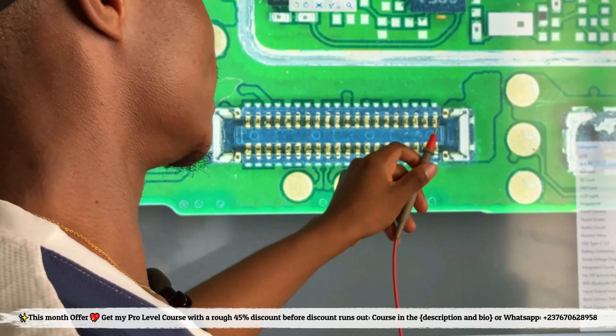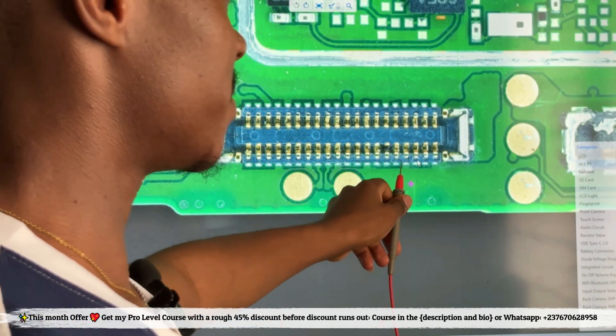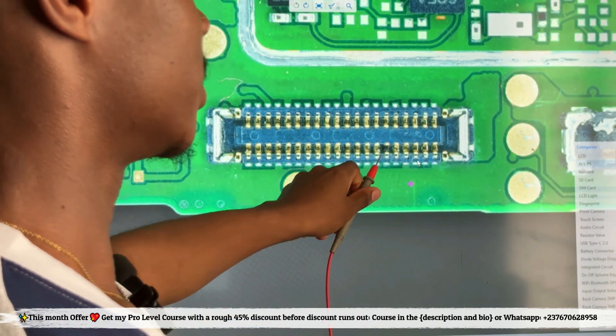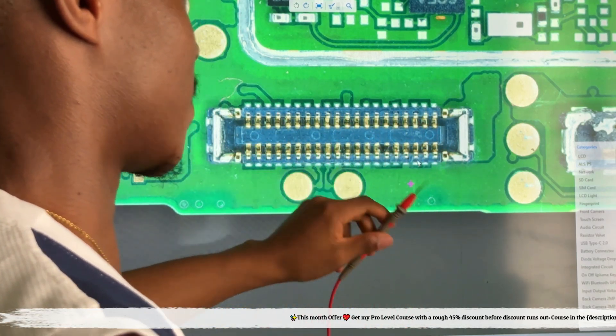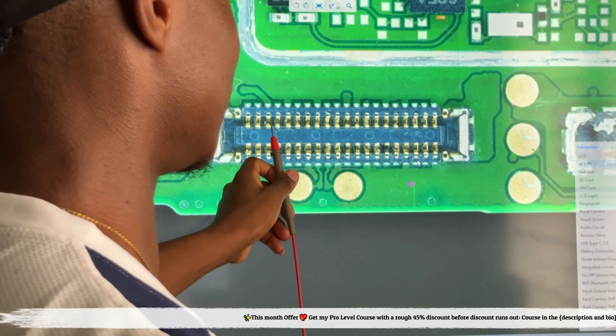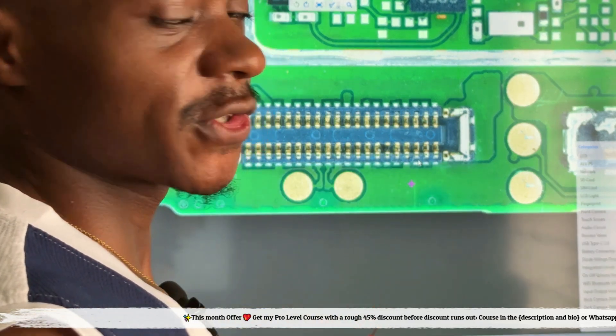Some things here are not connected at all, which means even if they peel off you won't have to bother about that when you are changing this connector. For the ones that you cannot clearly see the track, you can just use your schematic diagram or your bitmap to know.